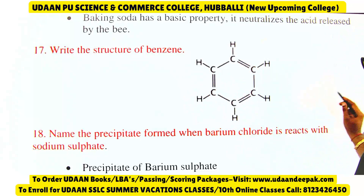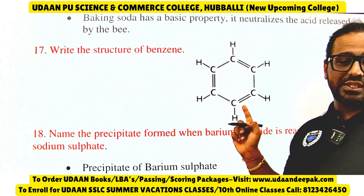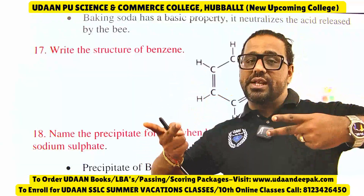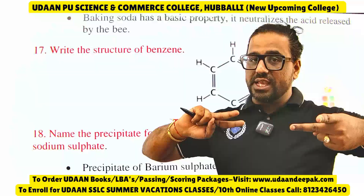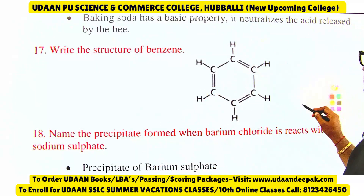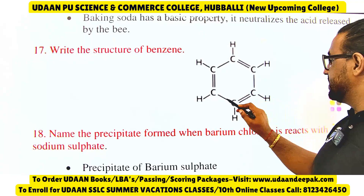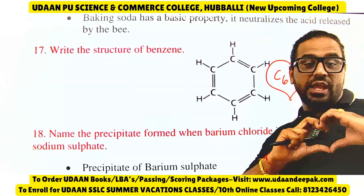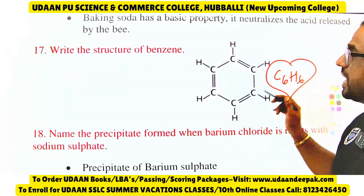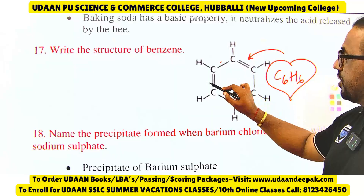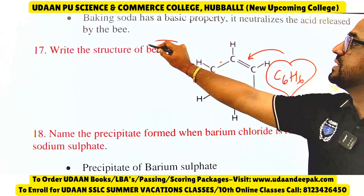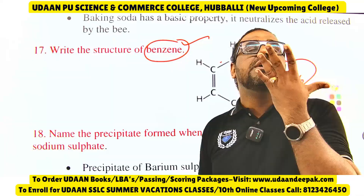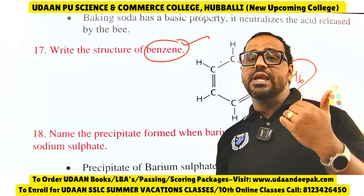Write the structure of benzene. The benzene structure consists of alternate double and single bonds — single, double, single, double, single, double. The formula is C6H6. Benzene has alternate double and single bonds, it is an aromatic hydrocarbon, and it is used in perfumes as a smell-producing compound.